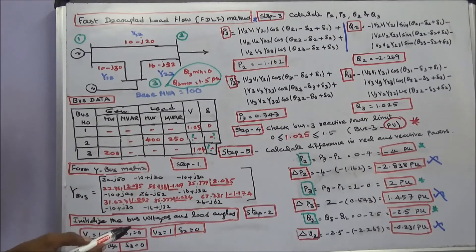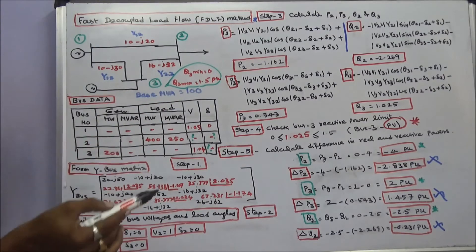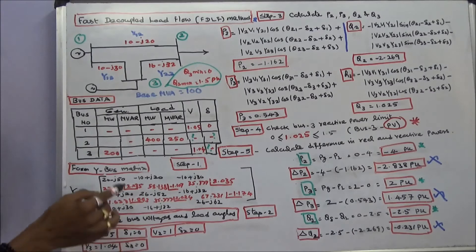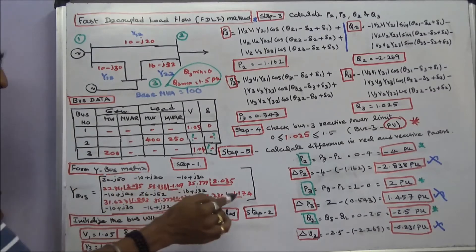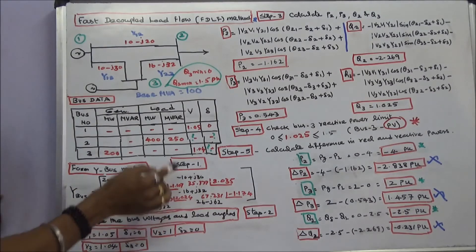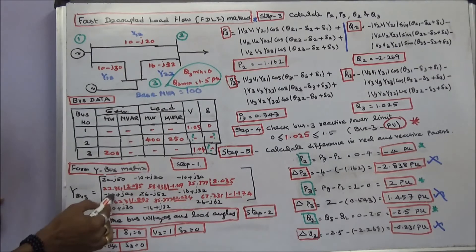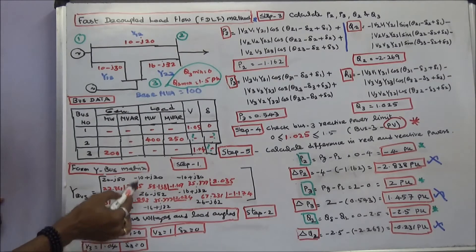Step 1: Set the calculator in radian mode and form the Y-bus matrix. This is the Y-bus matrix of the system, showing the magnitude in radians.